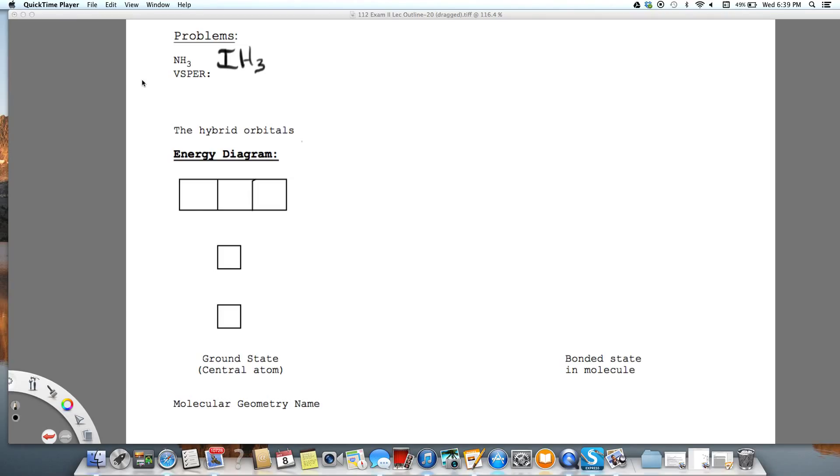In this video, we're going to see the hybridization of IH3. The reason why we're going to see IH3 is because it has five electron groups, and I want to see an example of that.